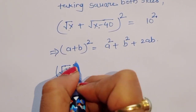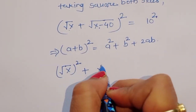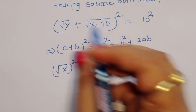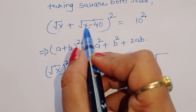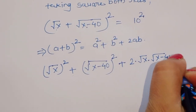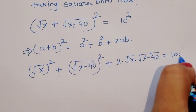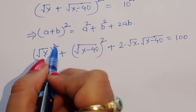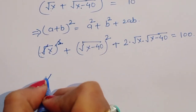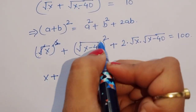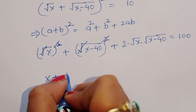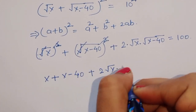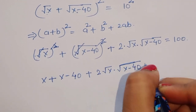Using this formula: square root of x whole squared, plus square root of x minus 40 whole squared, plus 2 times square root of x times square root of x minus 40, is equal to 100. The squares cancel with the square roots, giving us x plus x minus 40 plus 2 square root of x times square root of x minus 40 equals 100.